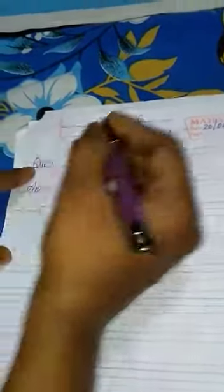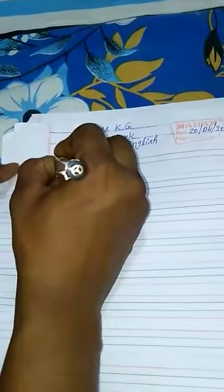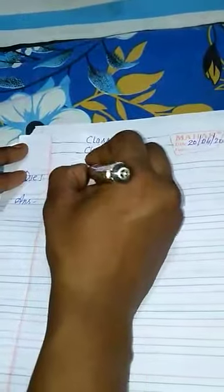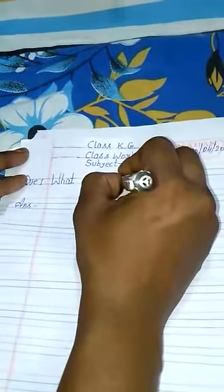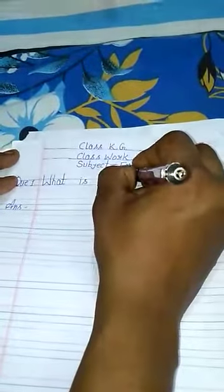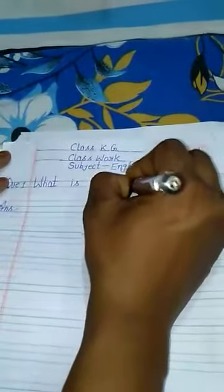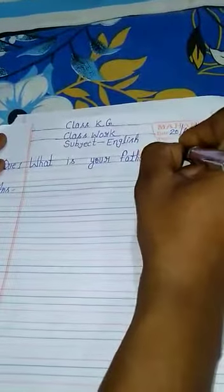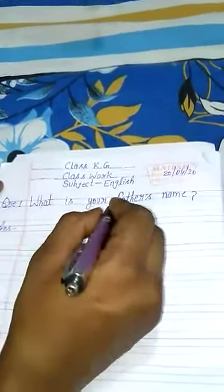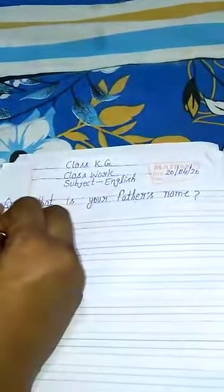Question — question means personal. W-H-A-T, 'what' means kia. I-S, 'is' means hai. Y-O-U-R, 'your' means aapke. F-A-T-H-E-R-S, 'father's' means pita ji ka. N-A-M-E, 'name' means naam. So the full question is: 'What is your father's name?' — Aapke pita ji ka kia naam hai?